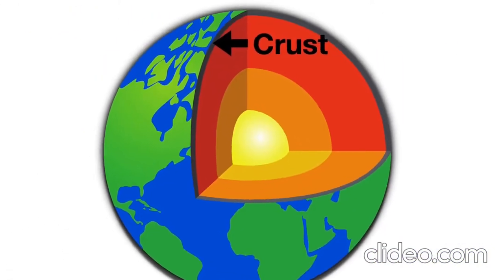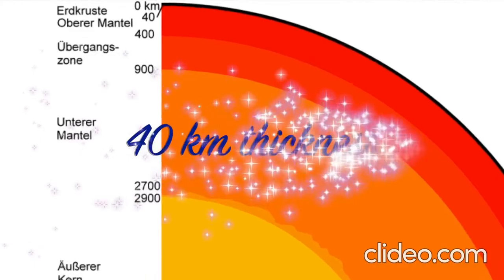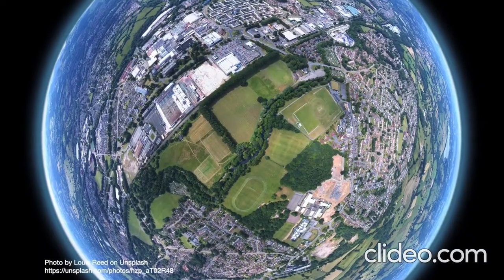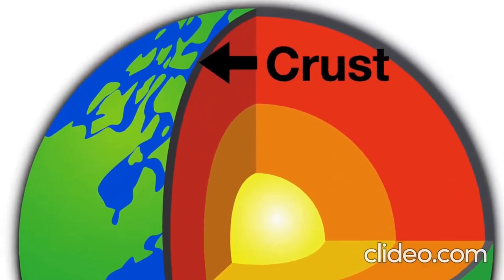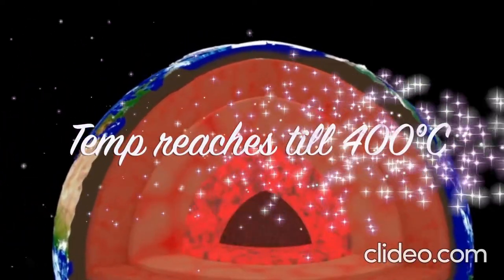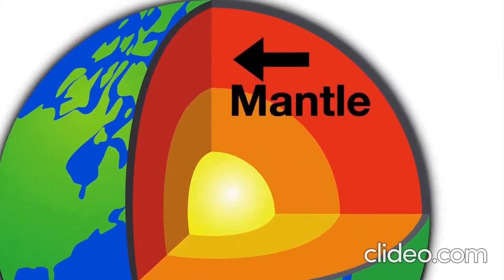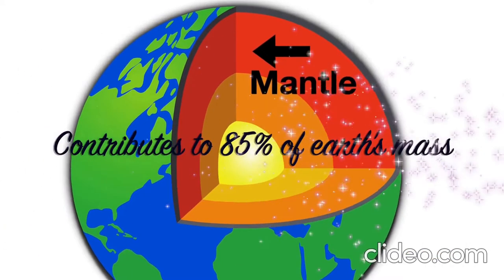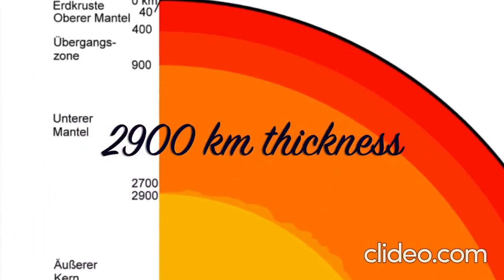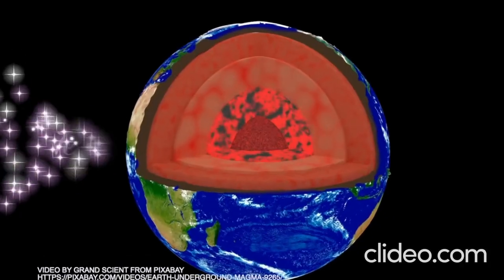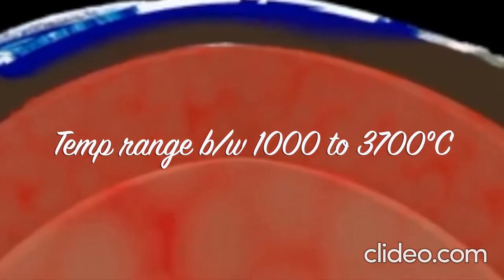The outermost layer is called the crust. Though in the screen it looks like a thin line, it's 40 kilometers thick. Though on the ground level it reflects the atmospheric temperature, when you go in deep, the temperature does increase — it reaches almost 400 degrees Celsius. The next layer is called the mantle. The mantle contributes almost 85% of the Earth's mass, has a thickness of around 2,900 kilometers, and the temperature ranges between 1,000 to 3,700 degrees Celsius.